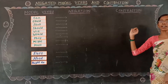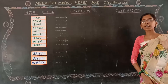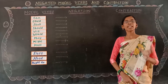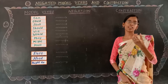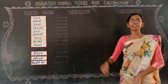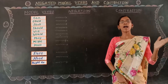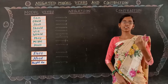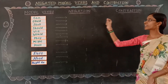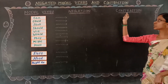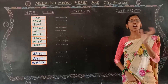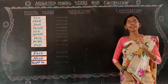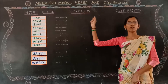Now coming to the third form, which is contraction. What do you mean by contraction? Contraction is nothing but making things smaller. If you are writing a big paragraph, you make it smaller — that is contraction. So how will you contract the negative form? Instead of saying 'cannot,' you can say 'can't.' So 'can't' is the contraction form of negative modal verbs.